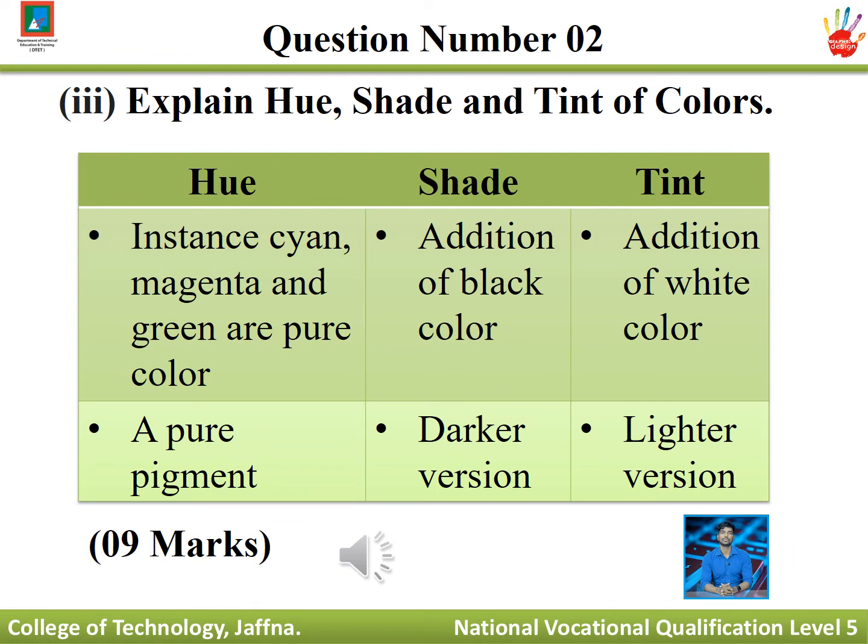Question number three: explain hue, shade, and tint of color. Hue — cyan, magenta, and green are pure colors. Shade — the addition of black color to a hue, creating a darker version. Tint — the addition of white color to a hue, creating a lighter version.